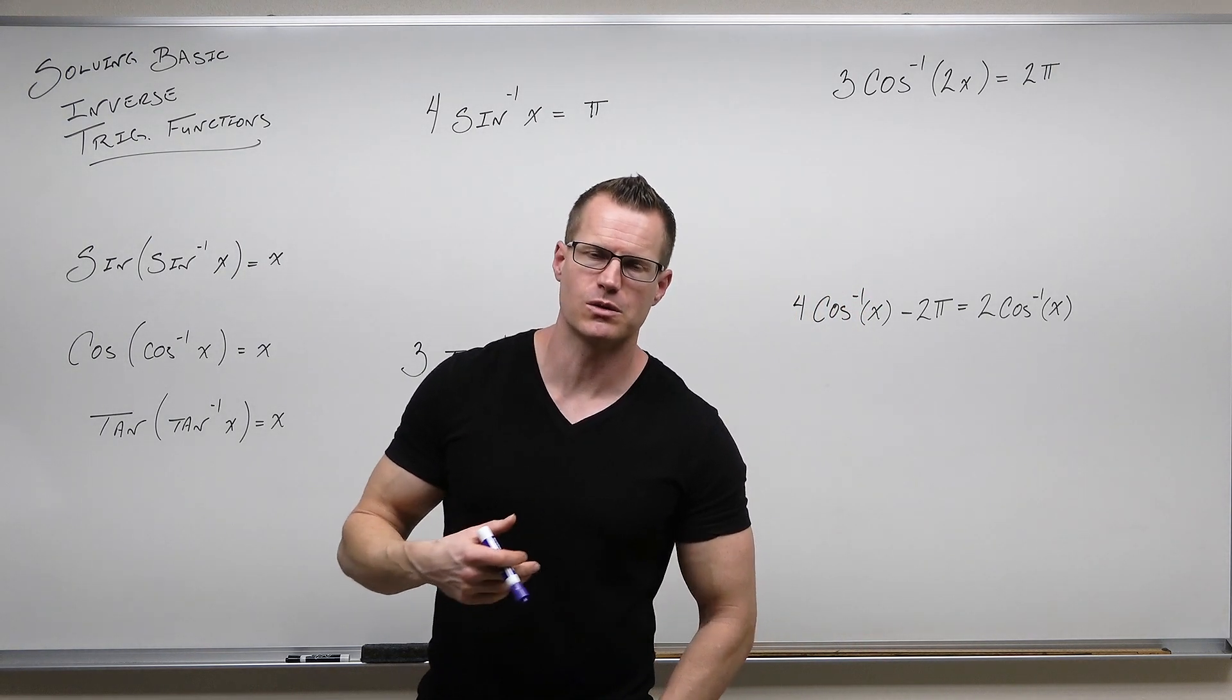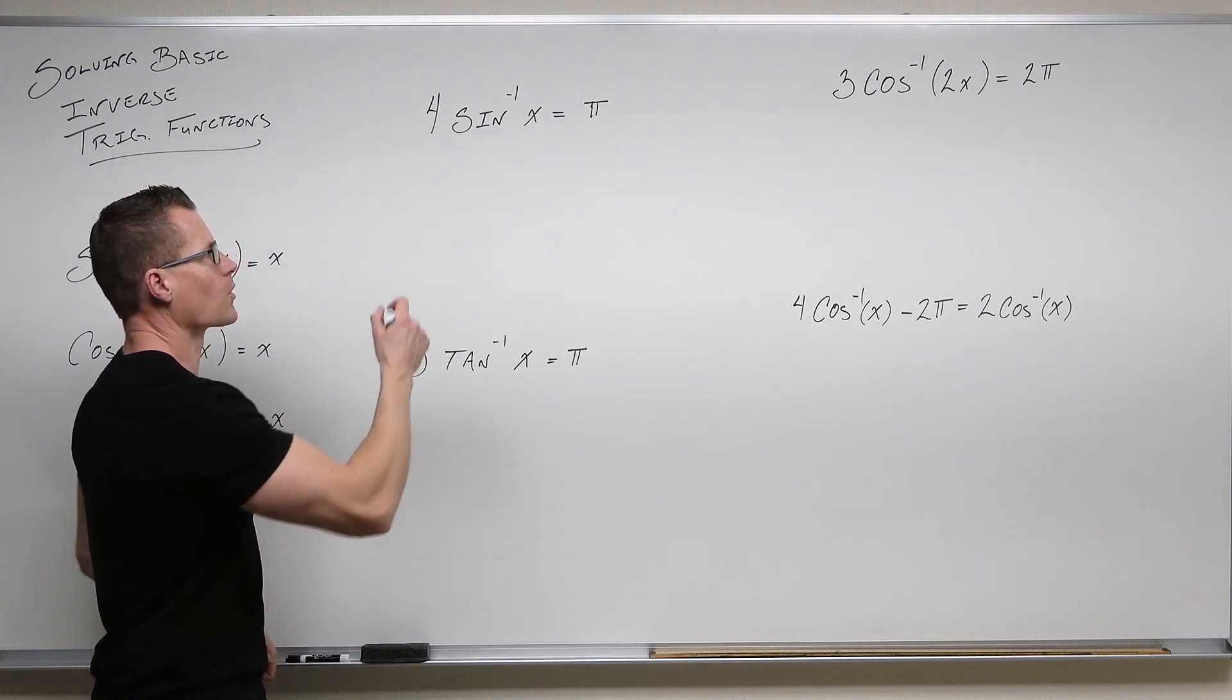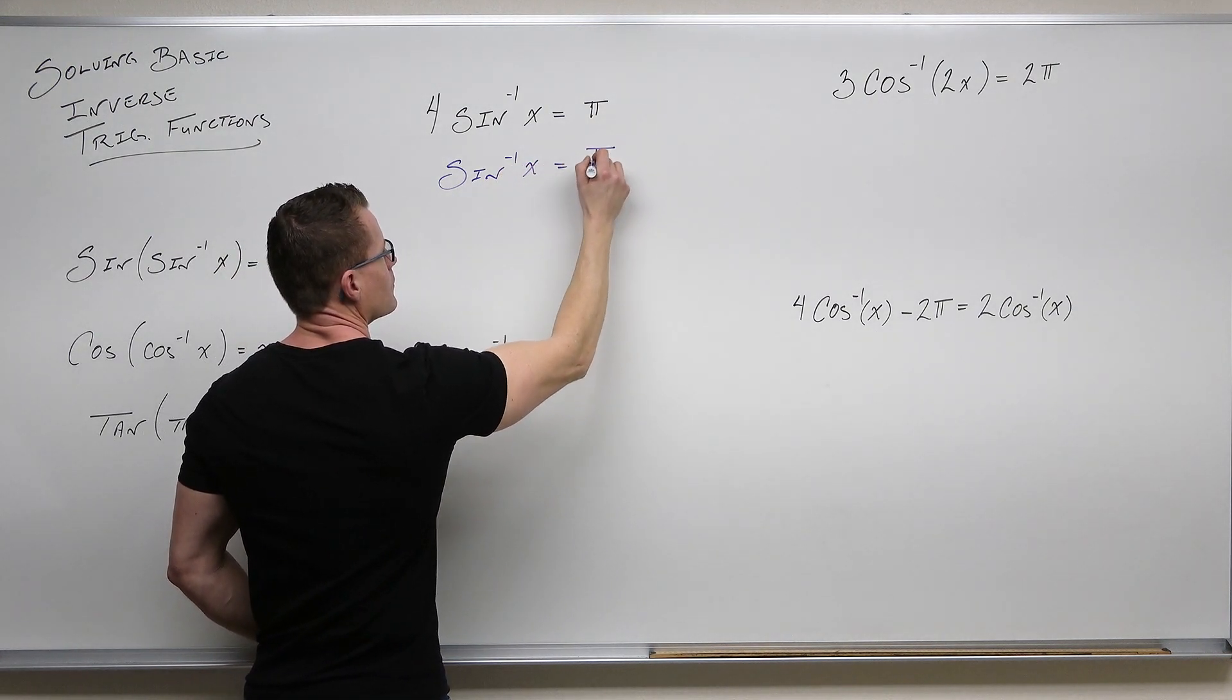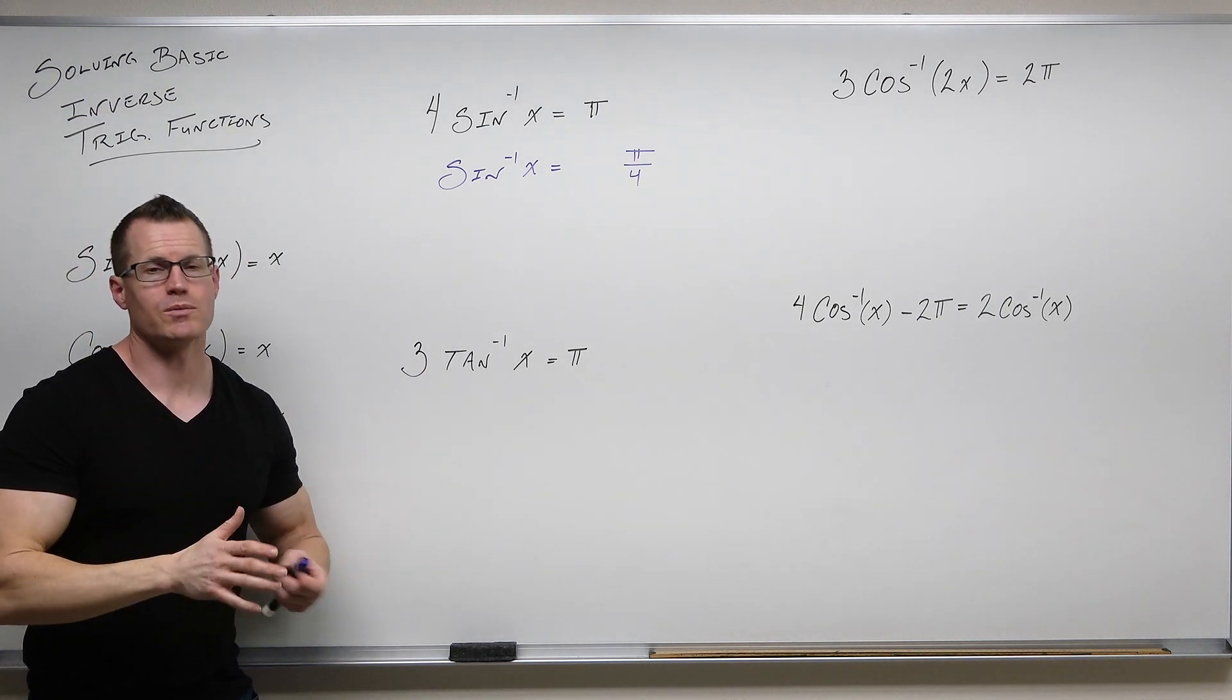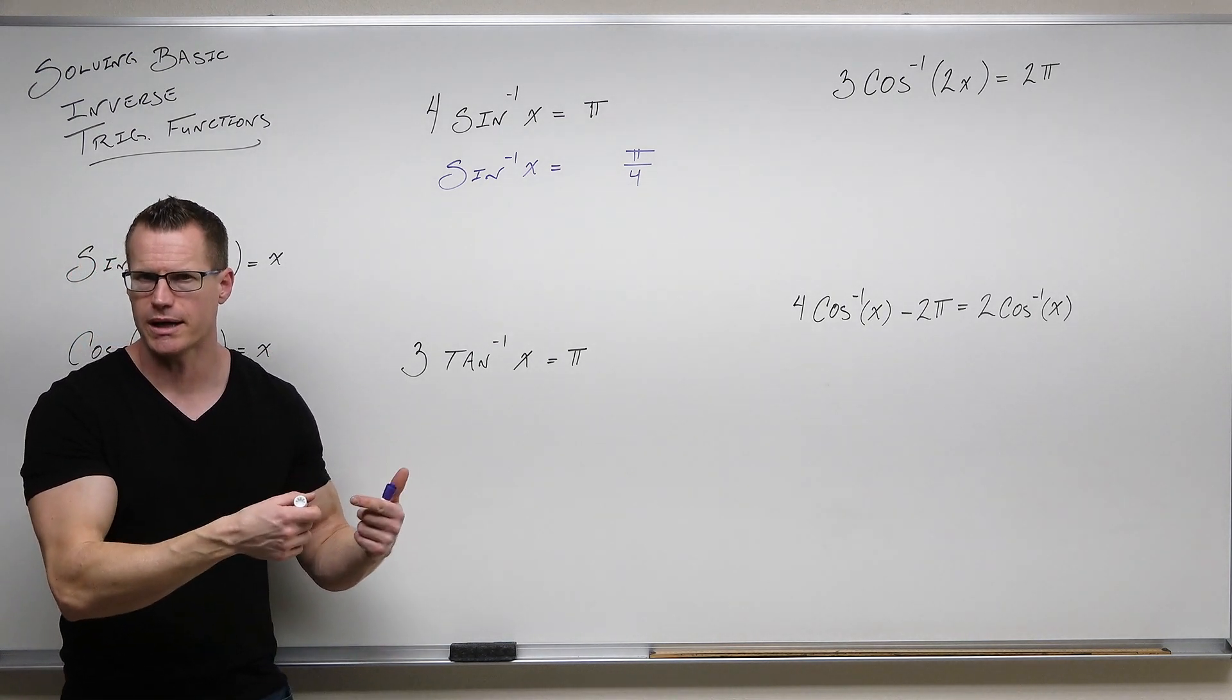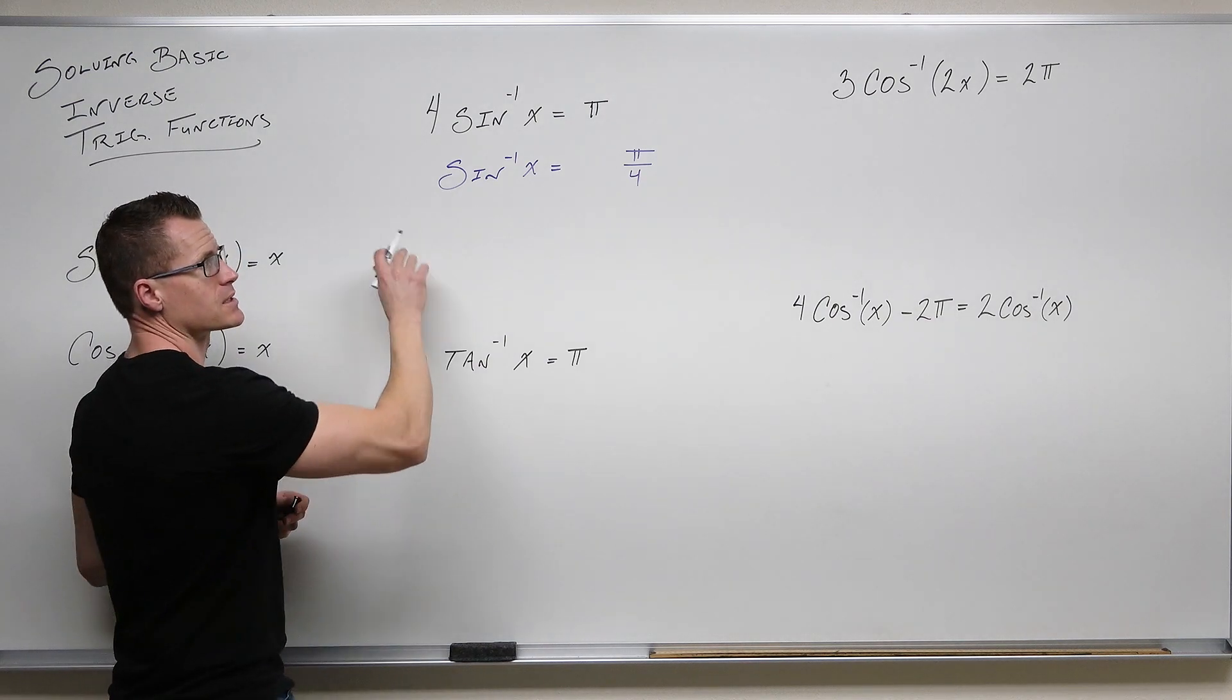If we have 4sin⁻¹(x) = π, the first thing we want to do is, of course, isolate sin⁻¹(x) so that we can undo it with the sine function. That means we'll divide by four. Now we've isolated sin⁻¹(x). The only way that we can get x by itself is to use sine on both sides of this equation, and that's exactly what we're going to do. Sine is going to undo sine inverse, just like sine inverse undoes sine. They're inverses of one another.